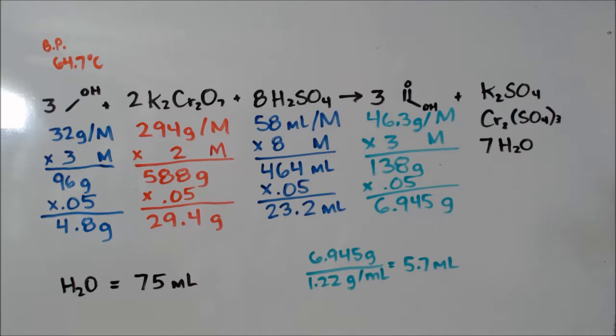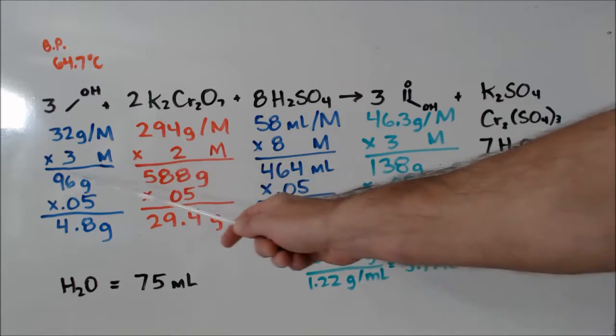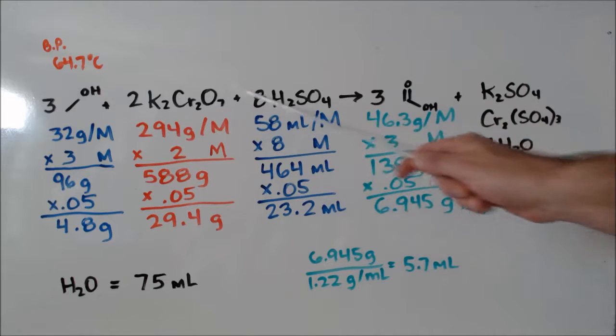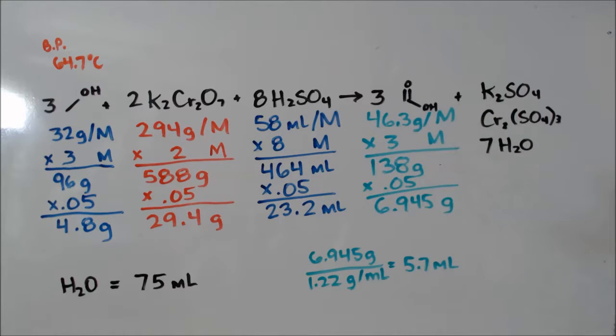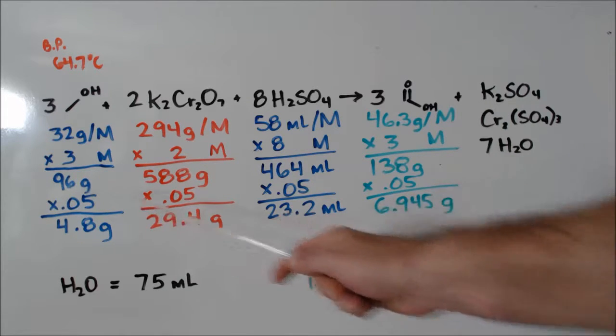I need twice as much because I need to oxidize that aldehyde to a carboxylic acid. That's the only difference. Here's my molar rates times the amount of moles they want me to use, and then I chose 0.05, that's 5%, so I took 5% of everything.